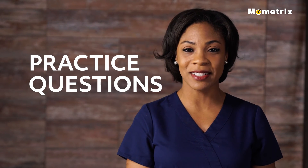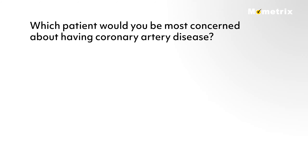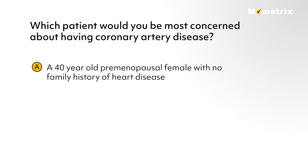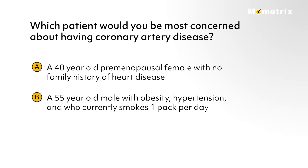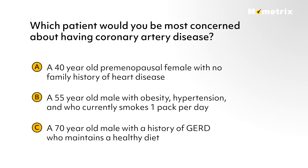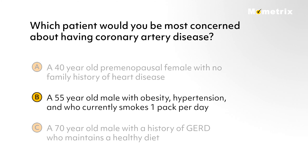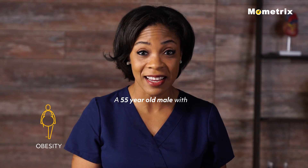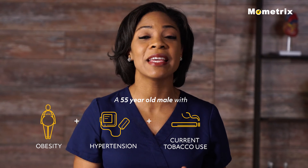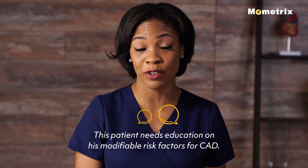Which patient would you be most concerned about having coronary artery disease? A: a 40-year-old pre-menopausal female with no family history of heart disease. B: a 55-year-old male with obesity, hypertension, and who currently smokes one pack per day. Or C: a 70-year-old male with a history of GERD who maintains a healthy diet. If you selected B, that is correct! A 55-year-old male with obesity, hypertension, and current tobacco use is at an increased risk for coronary artery disease and needs education on his modifiable risk factors.